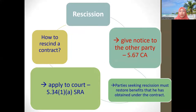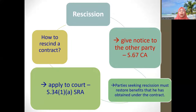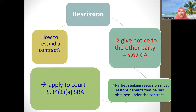Rescission can be effected by giving notice to the other party that you are rescinding the contract — refer to Section 67 of the Contracts Act — or by application to the court under the Specific Relief Act, under Section 34(1)(a). You cannot simply rescind informally; it must be done in a formal manner. Whatever benefit received must be restored — the parties are returned to their earlier position. If nothing has moved then the status quo is maintained, but usually benefit has been received and must be restored.